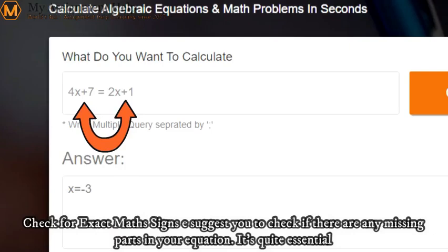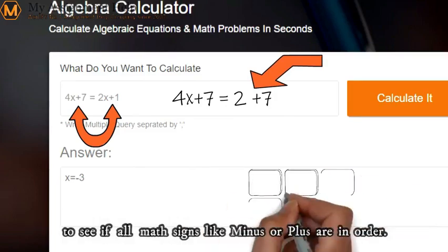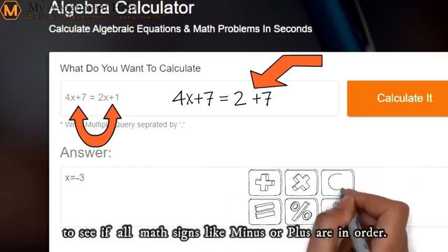Step 2: Check for exact maths signs. We suggest you check if there are any missing parts in your equation. It's quite essential to see if all maths signs like minus or plus are in order.